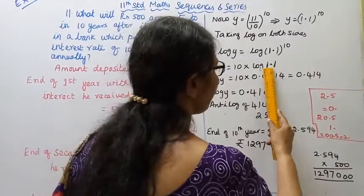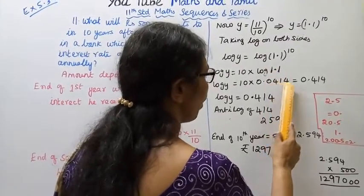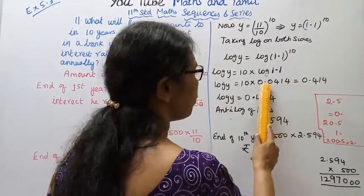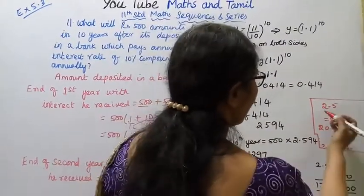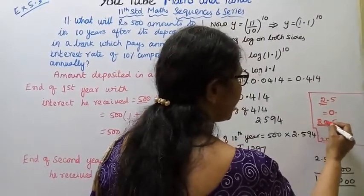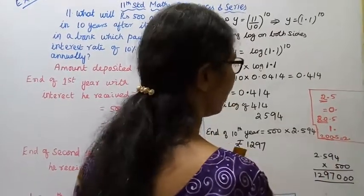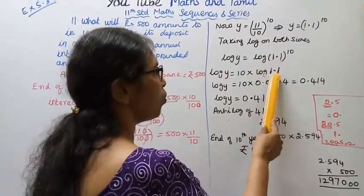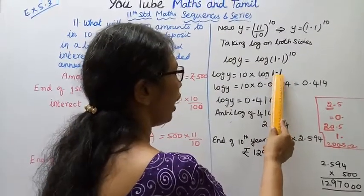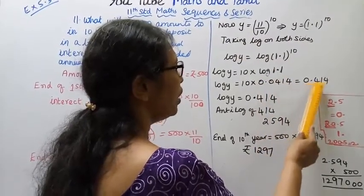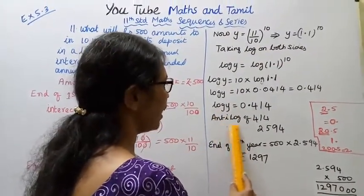Looking up the log table — start with 10, then find 11. The value of log(11) from the table is 0.0414. Since log(1.1) is 0.0414, then log y equals 10 into 0.0414, which gives log y equal to 0.414.